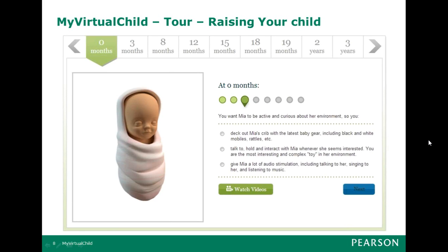Here is an example of a decision point they have to make. It says that the child, Mia, we want to be active and curious about the environment. So the virtual parent can decide to either deck out the crib with the latest baby gear — black and white mobiles, rattles — or talk to, hold, and interact with their baby as much as possible. Or they can give lots of audio stimulation: talking, singing, and listening to music. None of these might be right or wrong, but they may certainly affect the development of that child.